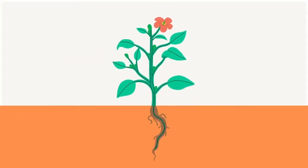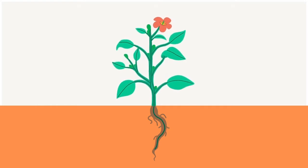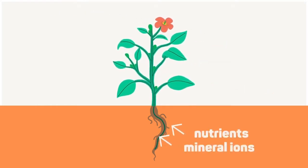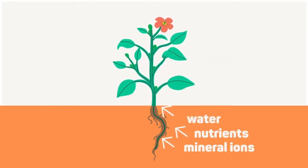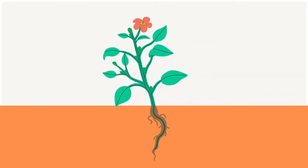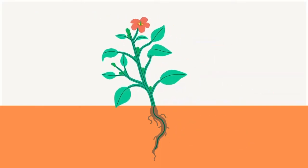Let's look at the general plant structure. Plants have a root system which serves to absorb mineral ions, nutrients and water from the soil. It is also there to anchor the plant down and stop it falling over.